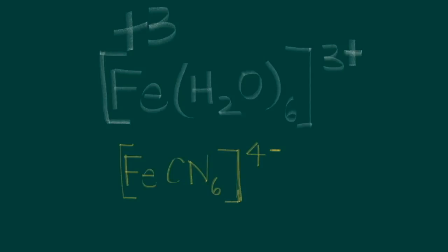Similarly for the cyanide complex: six cyanide ligands, each carrying a negative one oxidation state, associate with the central atom, and the overall charge is negative four. So six negatives, but the net charge is negative four. The net oxidation state of the complex being negative four means the six negatives are counterbalanced by a positive two oxidation state on the iron, leaving a net charge on the complex of negative four.